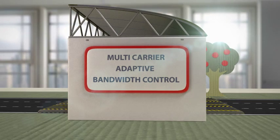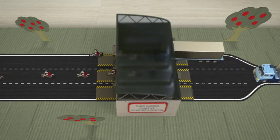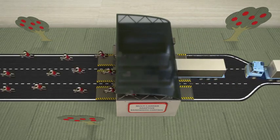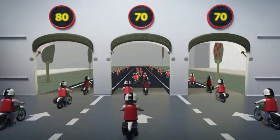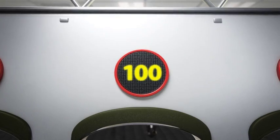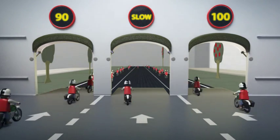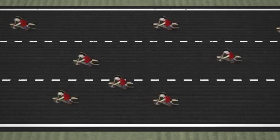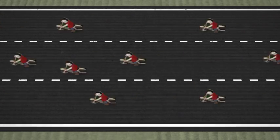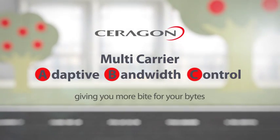We call it multi-carrier adaptive bandwidth control. It optimally distributes your traffic between all the available parallel links using byte-by-byte load balancing. You get to coordinate the physical links and you can support adaptive modulation. If a link deteriorates, our system is immediately notified, your load is adjusted, and your network is optimized for 4G LTE services. Multi-carrier adaptive bandwidth control — giving you more byte for your bytes.